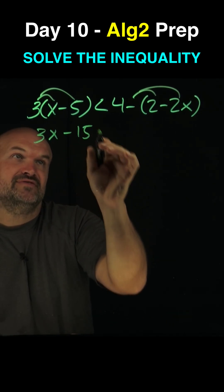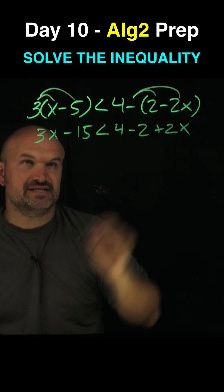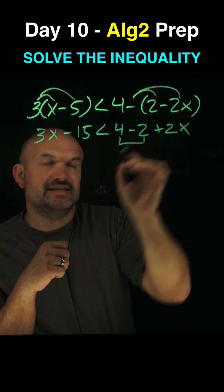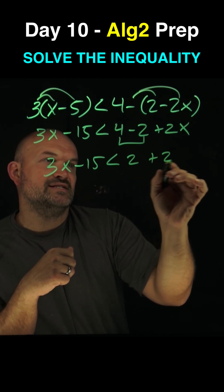So in this case, I'll have a 3x minus 15 is less than 4 minus 2 plus a positive 2x. Now I can go ahead and clean this up by combining those. So I have 3x minus 15 is less than 2 plus 2x.